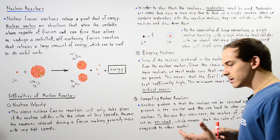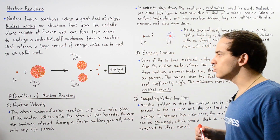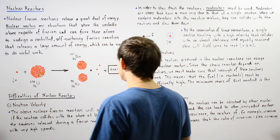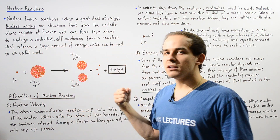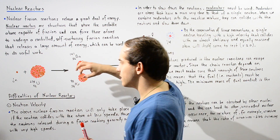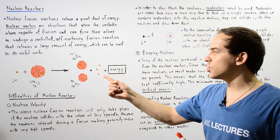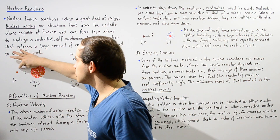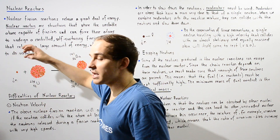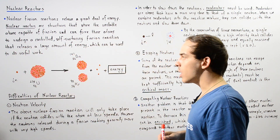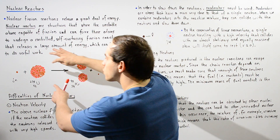One very common example of a nuclear fission reaction that takes place within a nuclear reactor is shown on this board. We basically have a single neutron that collides at slow velocities into the relatively unstable uranium-235 isotope. When the collision takes place, this nucleus basically absorbs this extra neutron, creating a very unstable system.